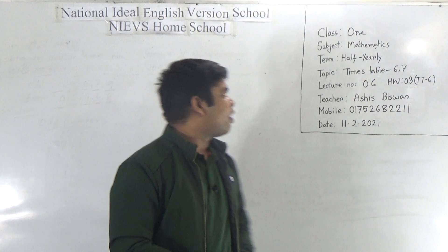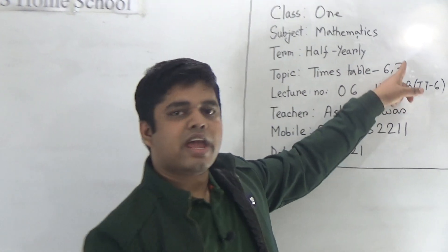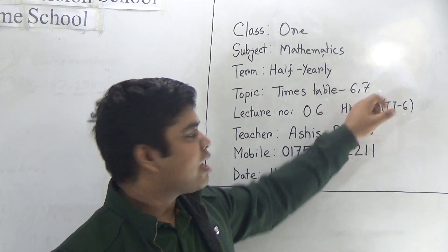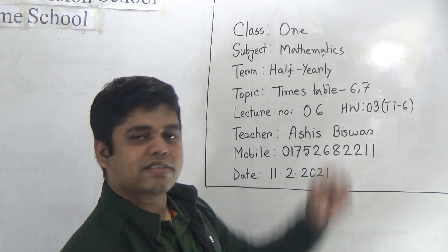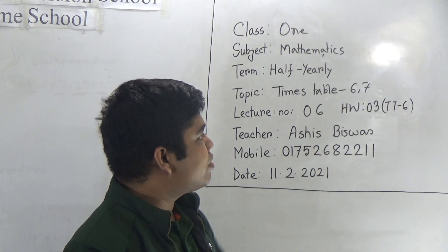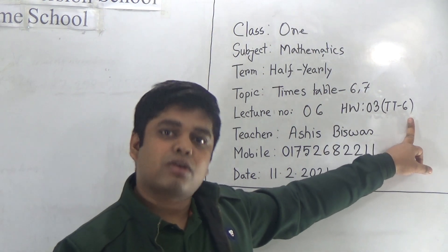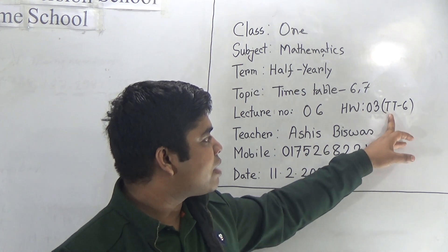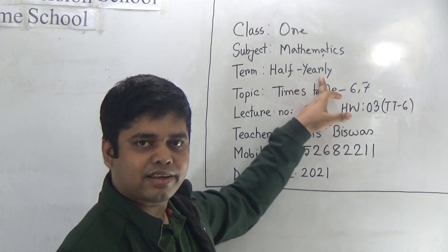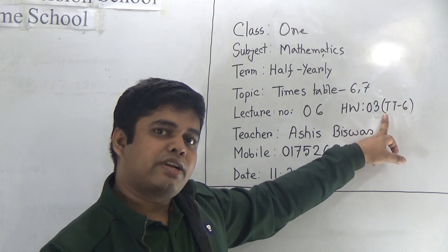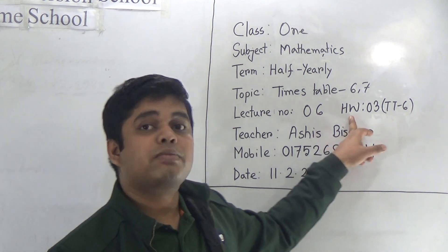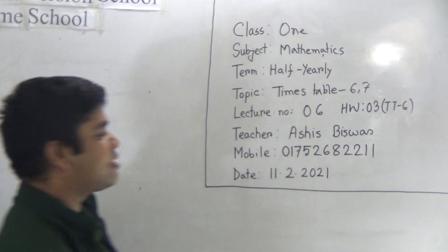Let us start our class. Our today's topic is Times Table 6 and 7. In our class we shall write Times Table 6 and 7 as your CW. Notice there is SW today — you need to do Times Table 6 as your SW in your SW copy. Today is our lecture number six of half yearly, and today's SW number is 3. When you write the times table in your SW copy, you must give the SW number.